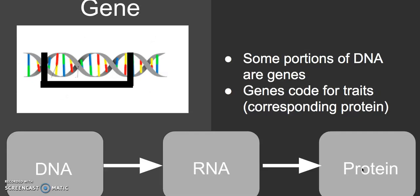To break this down further: all of your genetic material is your genome, made of material called DNA. A chromosome is one of those 46 pieces. A gene is a portion of DNA located on a chromosome. Not all portions of DNA are coding regions — not all portions code for a particular protein or make functional proteins. It's actually a pretty small percentage — about 1 to 2% of your entire genome actually codes for genes.